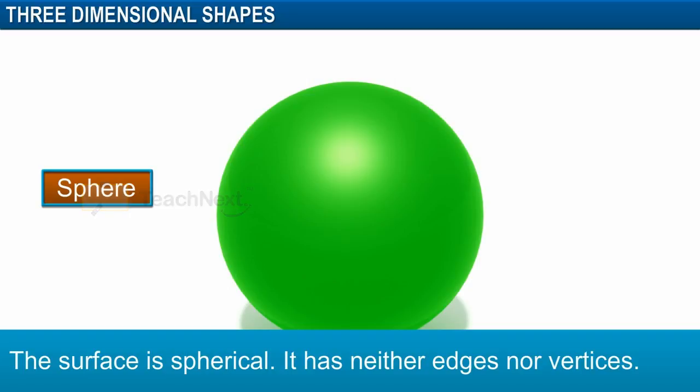If we observe the sphere, the surface is spherical. It has neither edges nor vertices.